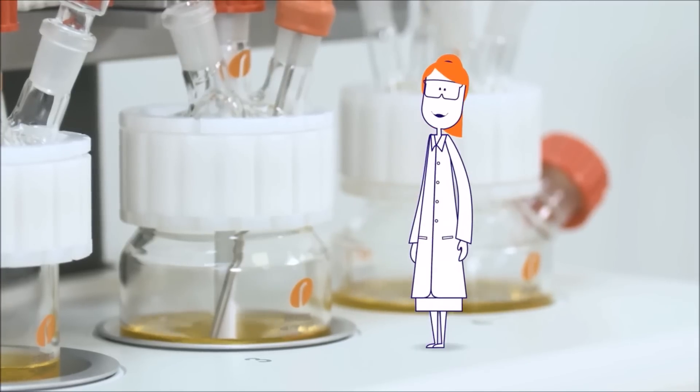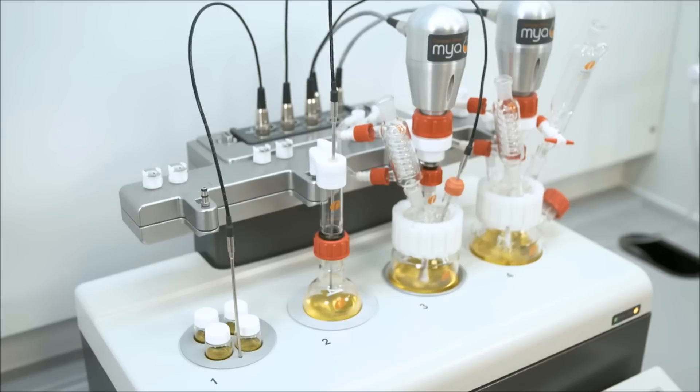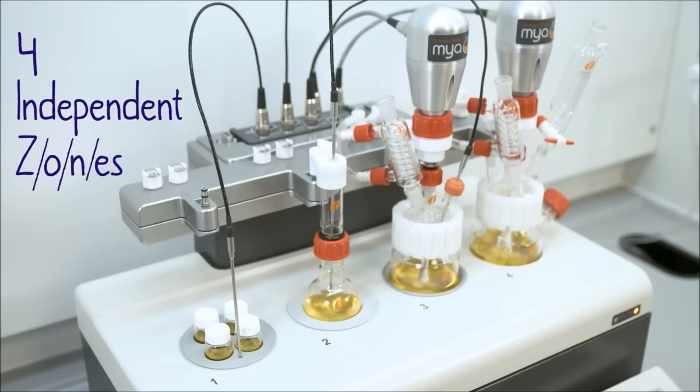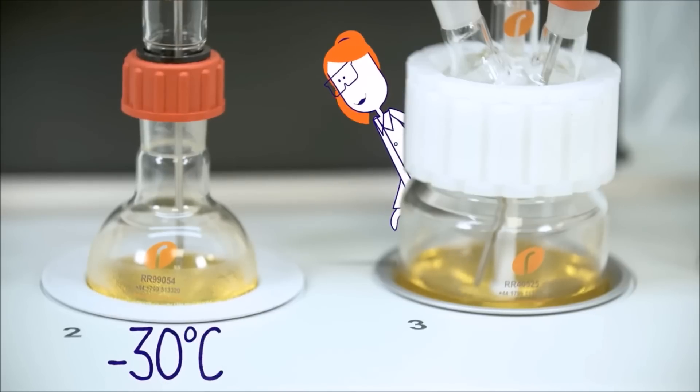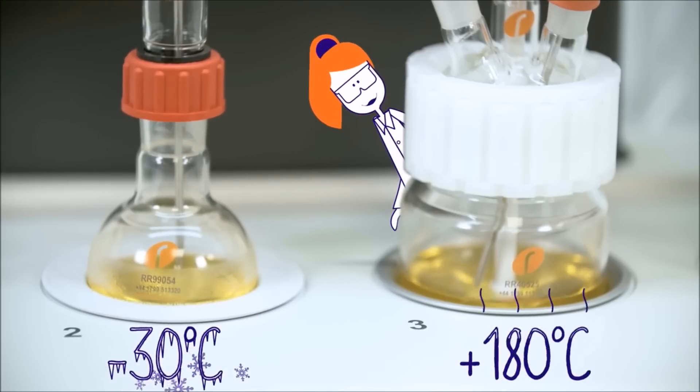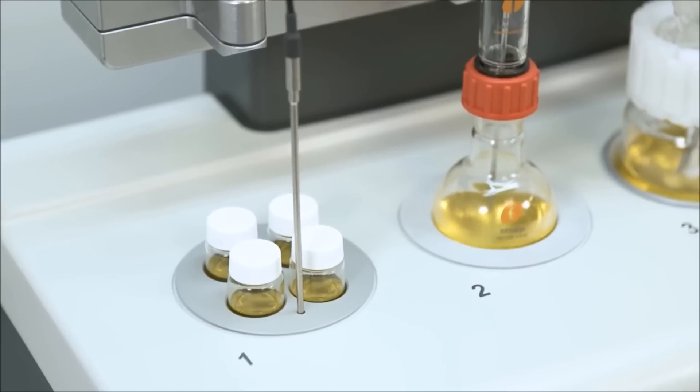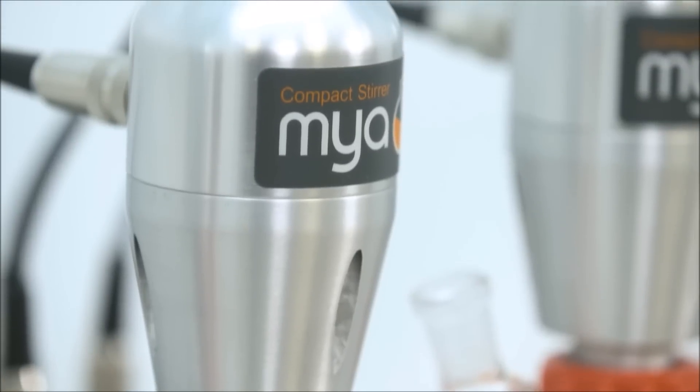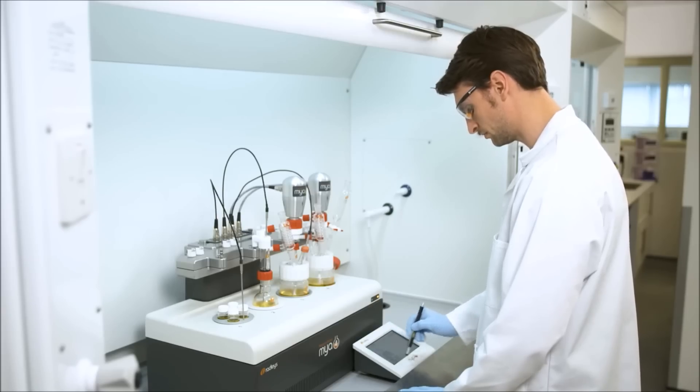Impressed? You should be. Maia 4 will heat and cool up to four positions independently from minus 30 to 180 degrees with a choice of magnetic or overhead stirring. An easy-to-use control pad allows you to make changes to your experiment quickly and easily.